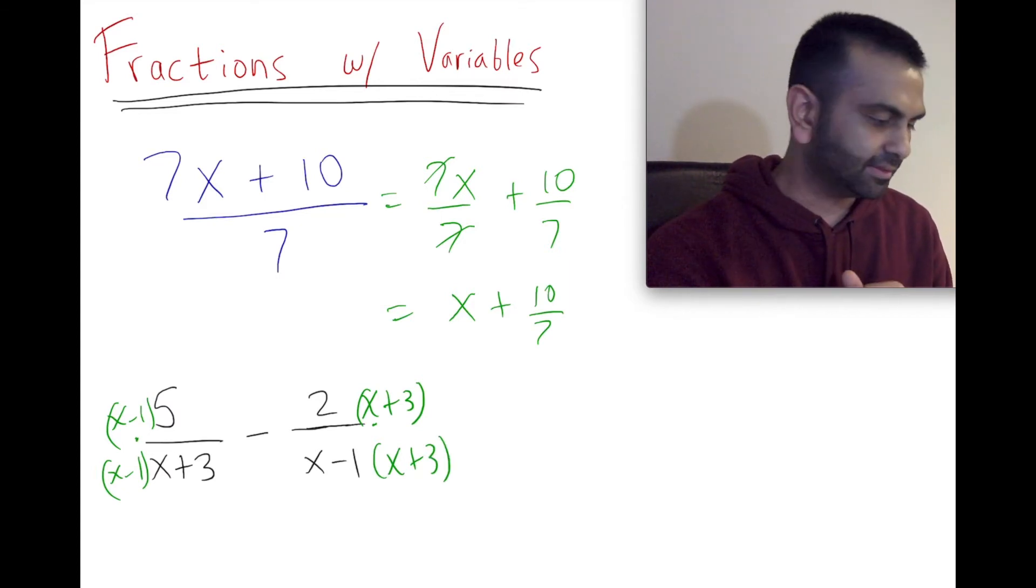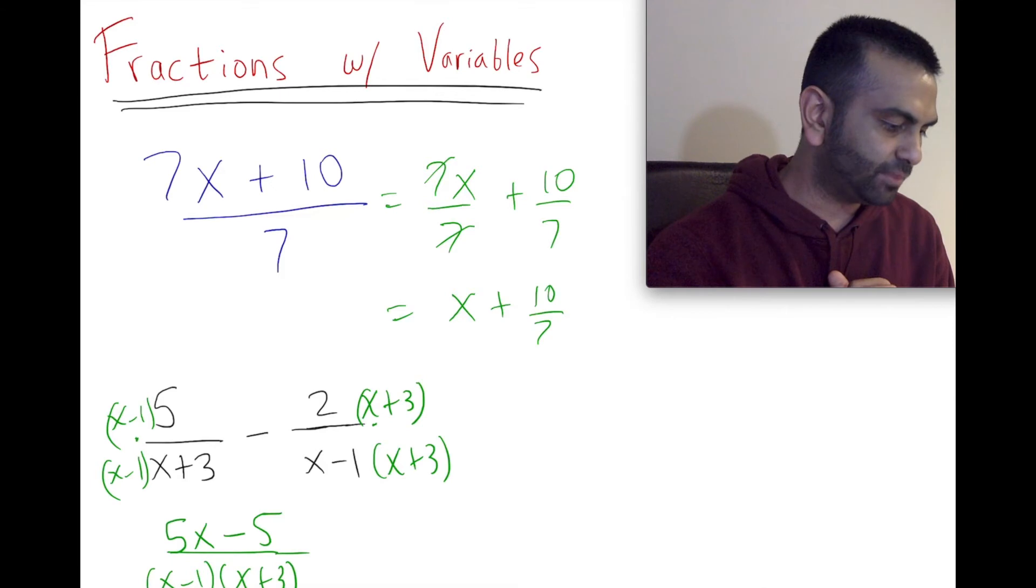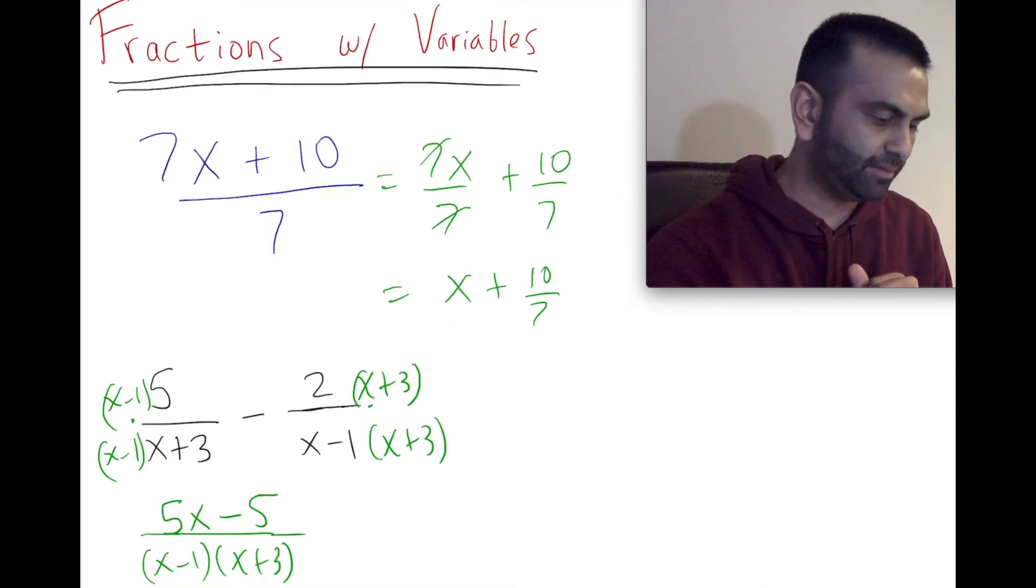When we do that, this first term becomes 5 times (x minus 1), which we can actually distribute out - that's going to be 5x minus 5 by the distributive property. The denominator is (x minus 1)(x plus 3). You could foil that out if you want, or we could just leave it like that for now.